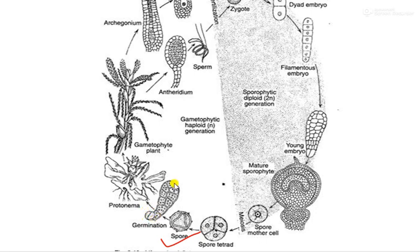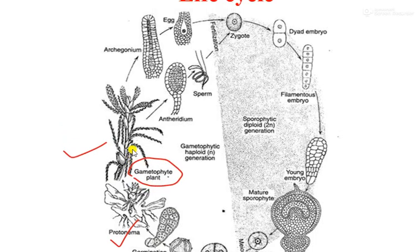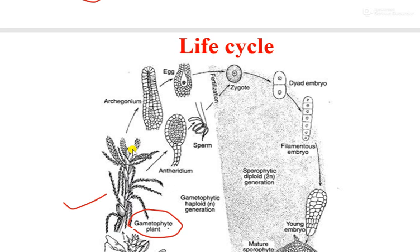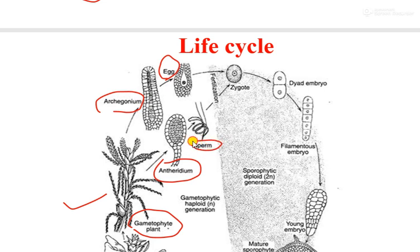The gametophytic generation begins with the development of a spore. The spore germinates to form a protonema, which develops further to form the adult gametophytic plant. The adult gametophytic plant produces the female sex organ, the archegonium, and the male sex organ, the antheridium. The archegonium forms the egg (the female gamete) and the antheridium forms the sperm (the male gamete).